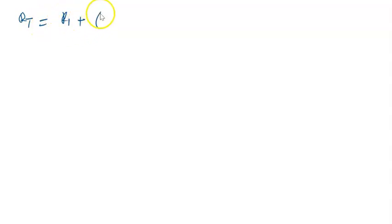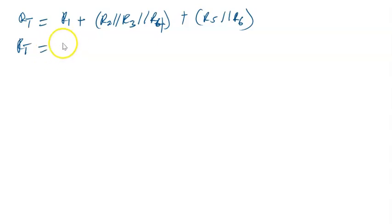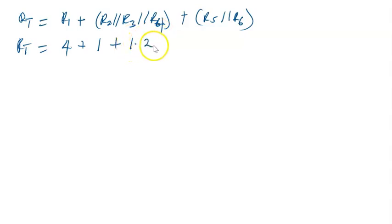Now we can find our total resistance RT. RT equals r1 plus the combined r2, r3, r4 in parallel plus the combined r5 and r6 in parallel. R1 is 4 ohms, r2||r3||r4 is 1 ohm, and r5||r6 is 1.2 ohms. So RT = 4 + 1 + 1.2 = 6.2 ohms.